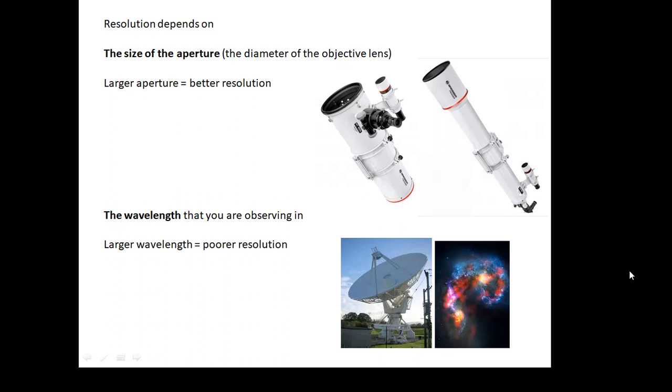Now, resolution depends on two things. It depends on the size of the aperture, which is basically the diameter of the objective. And the larger the aperture, the better your resolution will be. The bigger the aperture of the telescope, the more tiny, tiny little stars you'll be able to see with it. And the other thing it depends on is the wavelength that you are observing in. And the larger the wavelength, the poorer the resolution. If you're looking at radio waves, then your resolution will be rubbish, because radio waves have a very, very big wavelength.